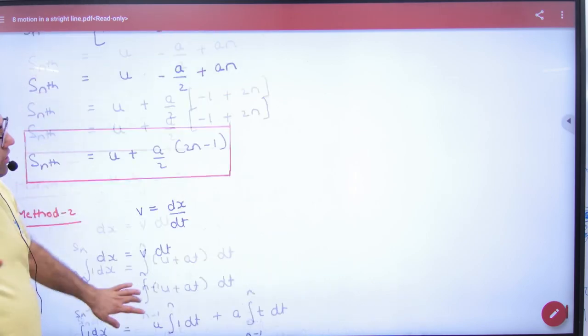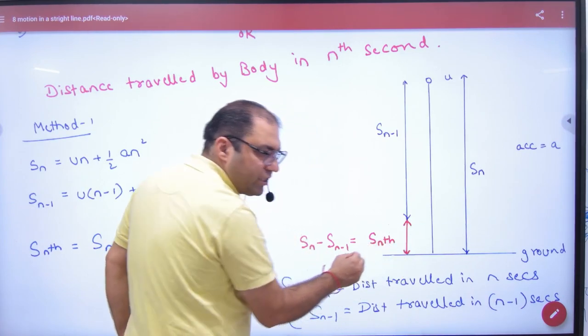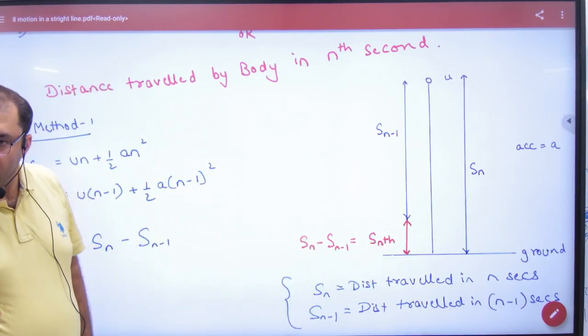Okay here, because when the body is here, then the time is n-1. When you are here, then the time is n. So the limit comes in time.